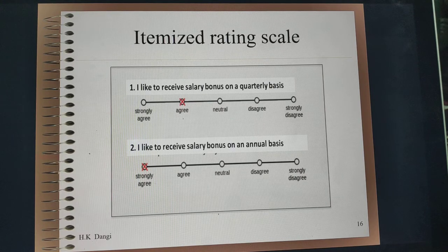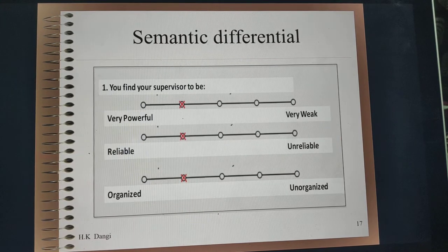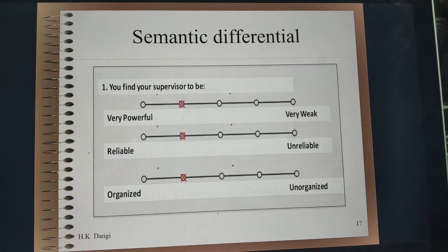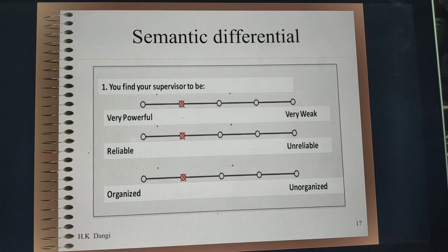The scale could also be in the form of a semantic differential. For example, you ask respondents to evaluate their supervisor, and two extreme semantically differentiated words are placed at each end: very powerful to very weak, reliable to unreliable, organized to unorganized.